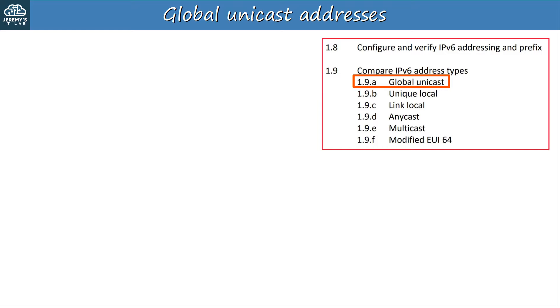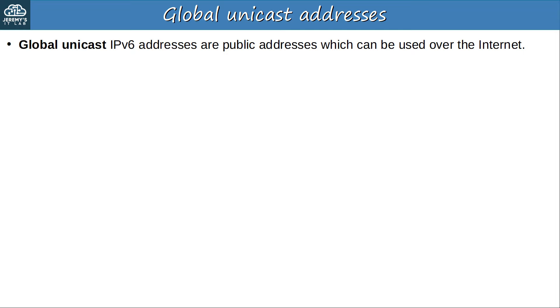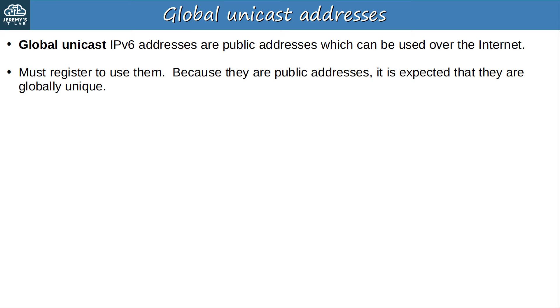EUI-64 isn't really a type of IPv6 address — it's a method of automatically generating an IPv6 address using a specified prefix and a MAC address. Now let's talk about an actual defined type: the global unicast address, exam topic 1.9a. Global unicast IPv6 addresses are public addresses which can be used over the Internet. You must register to use them. Because they are public addresses, it is expected that they are globally unique — if two companies use the same global unicast address range, there are going to be problems, like two homes having the exact same street address.